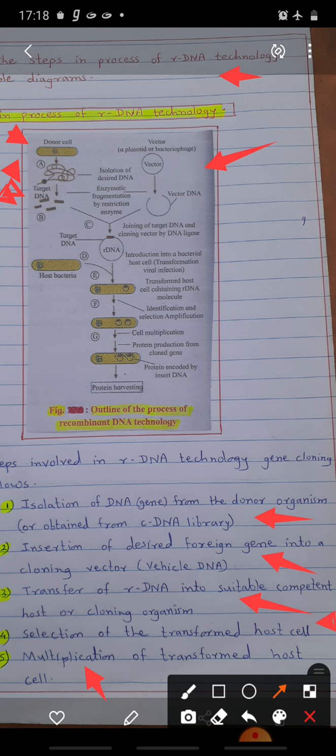Bacterial phage like lambda phage, M13. The most commonly used plasmid is PBR322. Plasmids are isolated from bacteria and cut by using restriction endonuclease enzyme into small pieces.